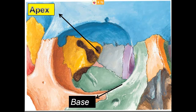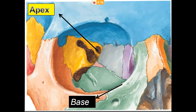The apex projects posteromedially, and here we can identify a foramen called the optic canal. This optic canal is contributed by the sphenoid, whereas the base is formed by the margins of the orbit. At the anterior part of the orbit you can identify four margins — superior, inferior, medial, and lateral — forming the base of the orbit.